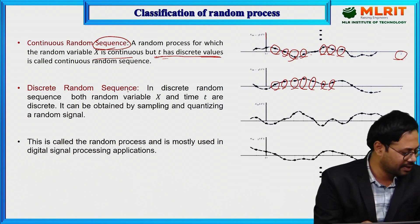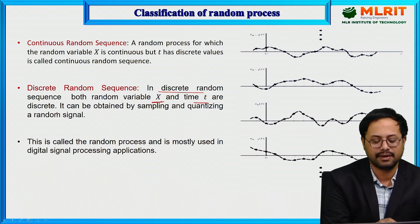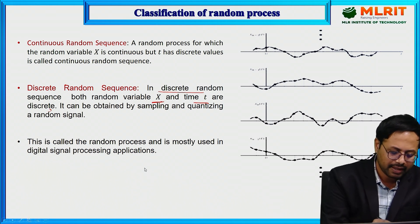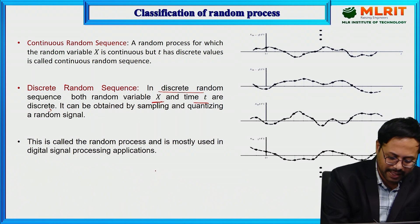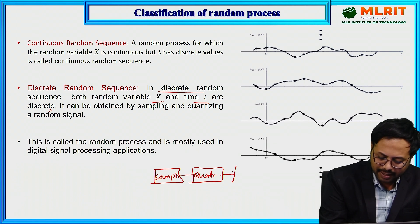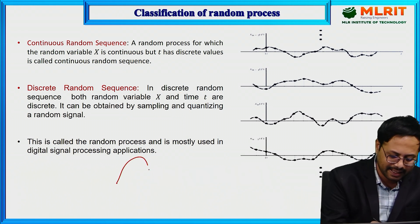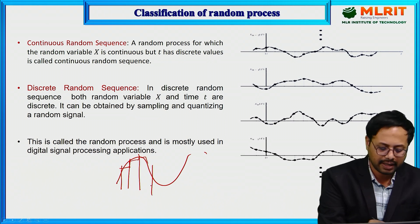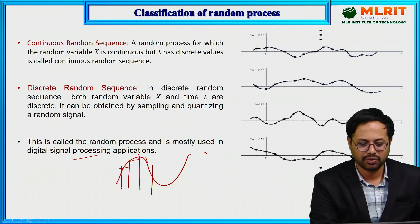The fourth type is discrete random sequence. In this case, both the random variable X and time t are discrete. This is the application of digital communication. After sampling and quantizing, any signal is first sampled, then quantized using uniform or non-uniform quantization — that complete process is called a discrete random sequence. This is mostly used for digital signal processing or digital communication applications.